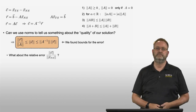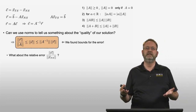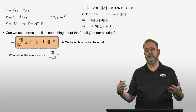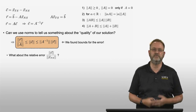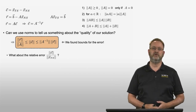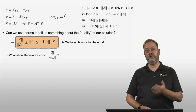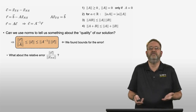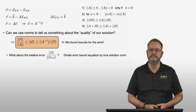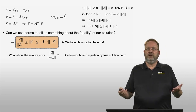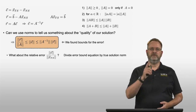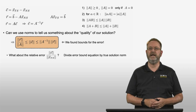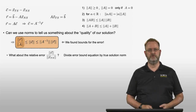But what about the relative error? The relative error was the true solution minus the numerical solution divided by the true solution. For systems of linear equations we have to take the norm, so the relative error norm is the norm of the error vector divided by the norm of the true solution. Can we find bounds for this as well? All we need to do, compared to the bound equation on the error, is divide that equation by the norm of the true solution.